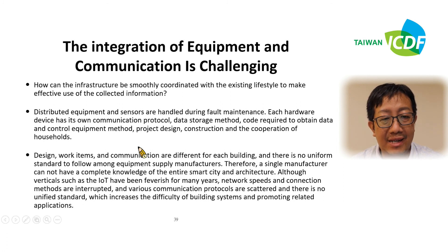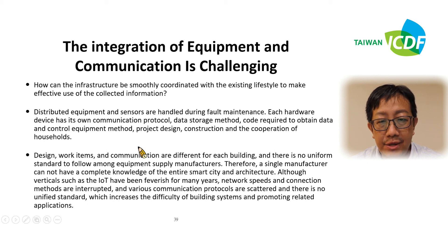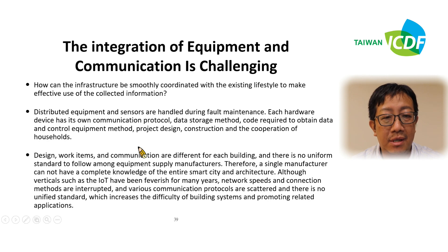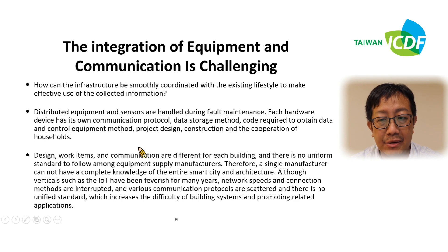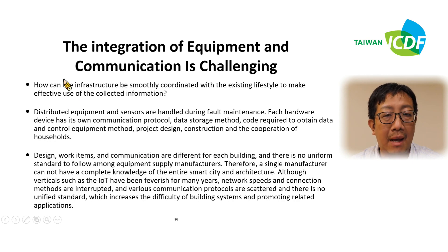Although the IoT vertical has been developed for many years, the narrow-band connections are just interrupted, and the various protocols are scattered with no unified standard, which increases the difficulty and complexity of the building system and makes it challenging to promote related applications. This is the building automation protocol framework. There are a variety of protocols from the physical, data link, network, transmission, session, presentation, and application layers.